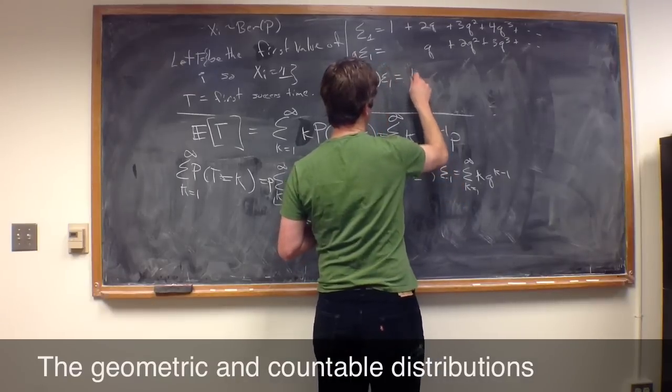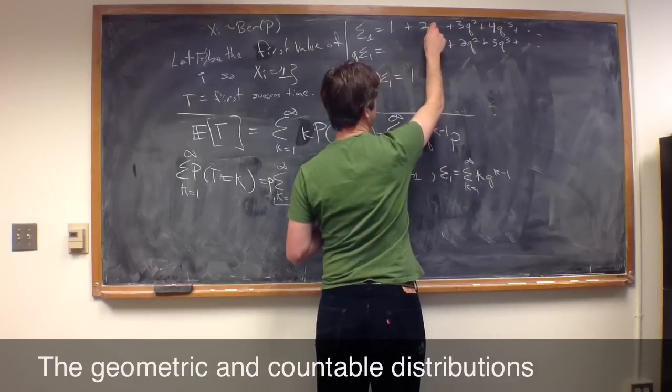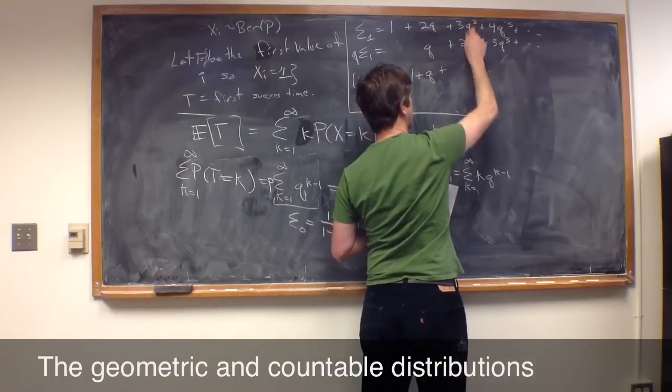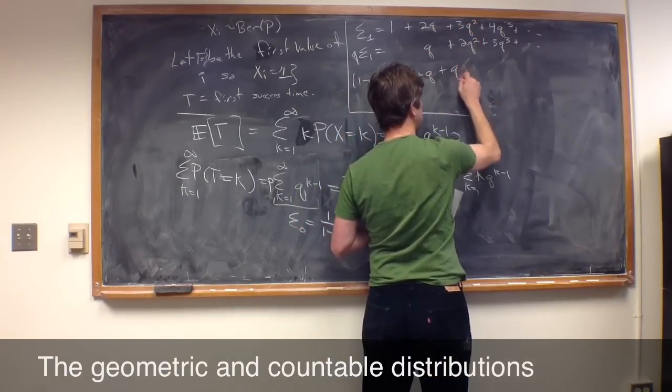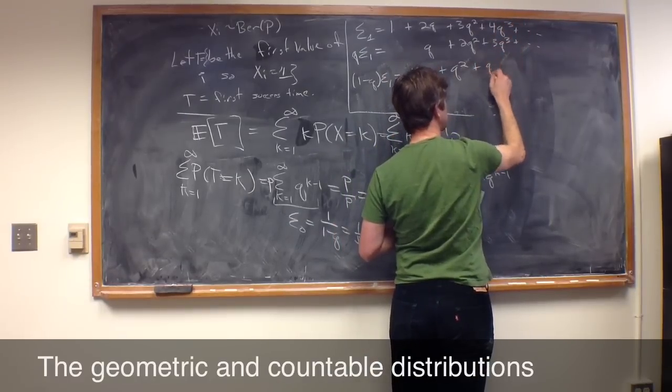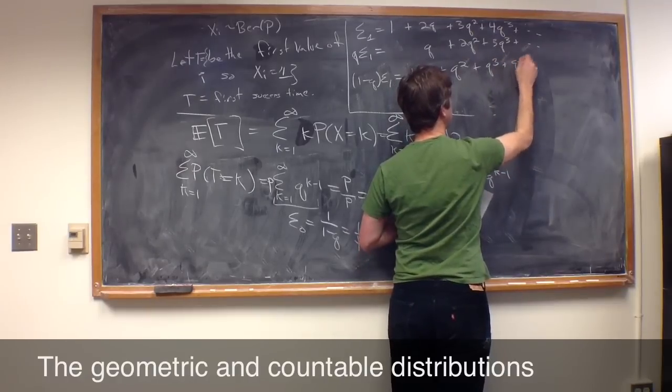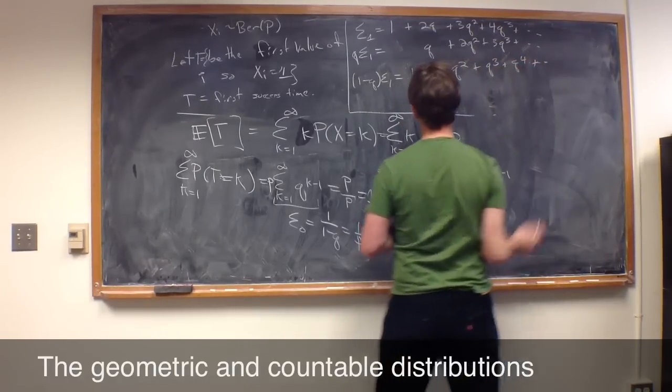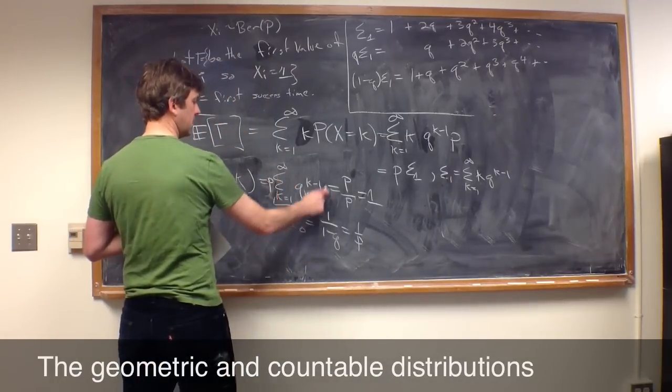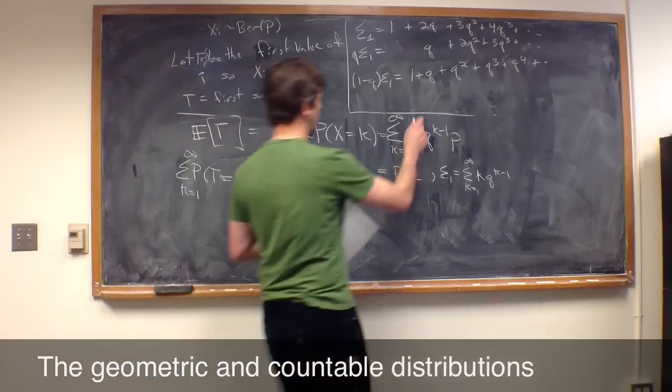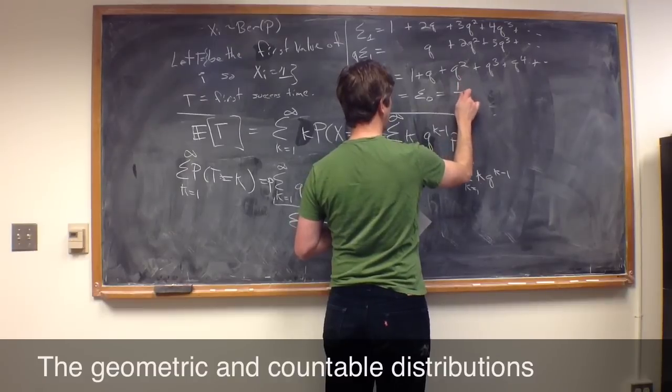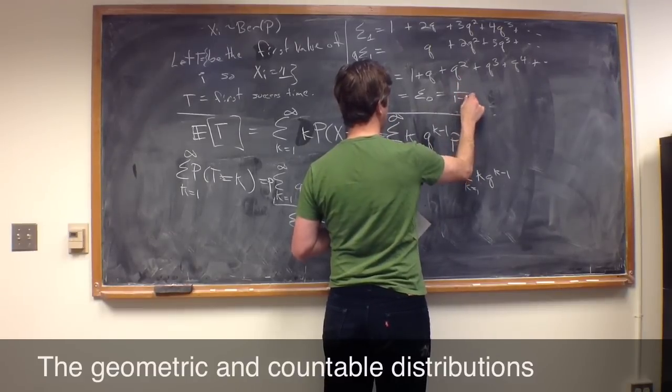So, now, let's subtract this from this. So, 1 minus Q times sigma 1. What is that going to be equal to? Well, I'm going to get a 1 from here, nothing. Here, I have 2Q minus 1Q, which is Q. Here, I have 3Q squared minus 2Q squared, which is Q squared. Here, I have 4Q cubed minus 3Q cubed, which is just Q cubed. And I claim that if you check, you'll see that it just keeps going that same way. And what is that? Well, that's exactly what the sum was down here. That's just sigma 0, which we know is 1 over 1 minus Q.